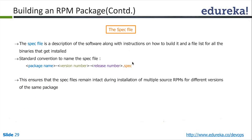The spec file is a description of the software along with instructions on how to build it and a file list for all the binaries that get installed. It is normally a file with a dot spec extension. This ensures the spec file remains intact during installation of multiple RPM source packages for various versions. As part of your DevOps activity, packaging is one important part. Normally you will have a separate team handling packaging at the enterprise level — there are build engineers who go through this completely.